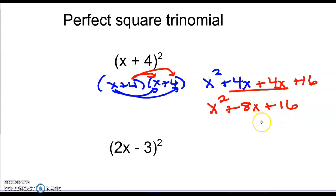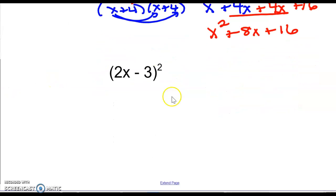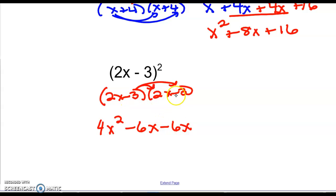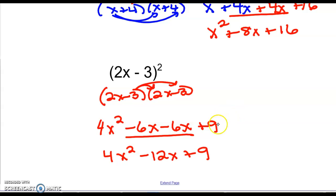It's called a perfect square trinomial because it has three terms and the beginning and end are perfect squares: x squared at the start, and 16 is 4 squared at the end. For the next one, (2x minus 3) squared means two times: take 2x times the binomial to get 4x² minus 6x, then negative 3 times the binomial: negative 6x and positive 9. Combine like terms: 4x² minus 12x plus 9. The 4 is 2 squared, x is squared, and 9 is 3 squared — a perfect square trinomial.